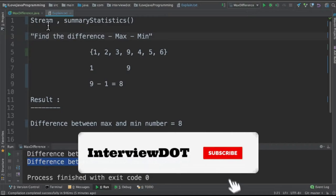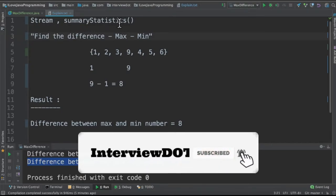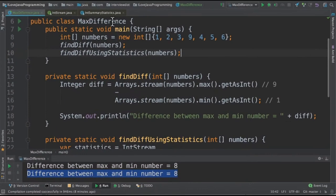To achieve this I'm going to use the stream APIs and the summary statistics API. Let's see the program now. I've written a class called max difference and there is an input array.